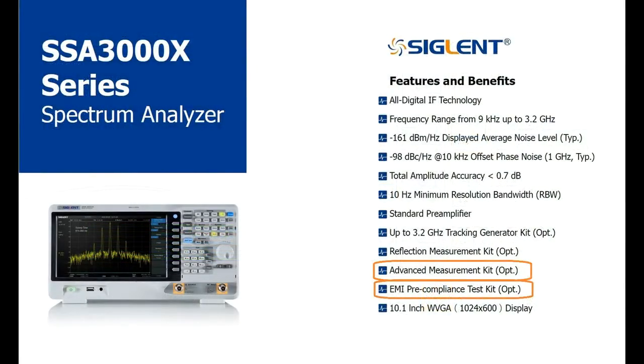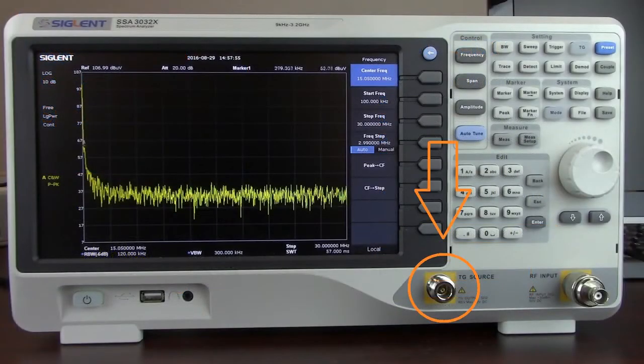And the final option that I'd like to cover today is the tracking generator. A tracking generator is a swept RF source that follows the analyzer frequency steps. It's typically used to test filters, amplifiers, and cables. The tracking generator hardware from Siglent is included with all versions of the SSA 3000X family.